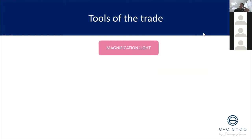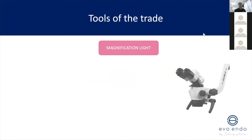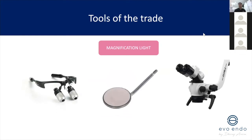Tools of the trade: fundamentally, magnification and light. I don't believe you can genuinely do endo successfully without some sort of magnification — that may be loupes or a microscope. I'd encourage all of you in the early stages of your career to consider getting a decent pair of loupes; it'll be a game changer. I use a combination of both loupes and my microscope. I fundamentally believe that as long as you can see what you're treating in a predictable fashion with magnification, do what you feel comfortable with. Also, the type of mirror you use affects the outcome — front-facing mirrors are better at reflecting light.